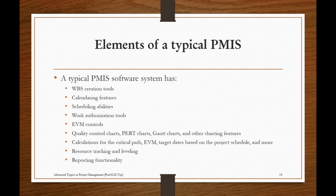Elements of a typical PMIS include: work breakdown creation tools, calendaring features, scheduling abilities, work authorization tools, Earned Value Management (EVM) controls, quality control charts, Program Evaluation and Review Technique (PERT) charts, Gantt charts and other charting features, critical path calculations, earned value management, target dates based on the project schedule, and resource tracking, leveling, and reporting functionality.